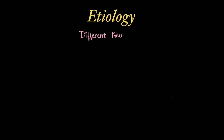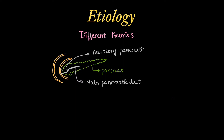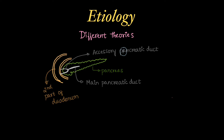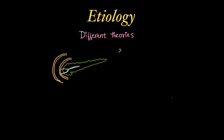Now that we have seen the case of groove pancreatitis, let's discuss the etiology. The relevant structures are the duodenum, pancreas, the main pancreatic duct, the accessory pancreatic duct, and the second part of the duodenum. The first cause can be obstruction of the minor papilla or the accessory pancreatic duct, leading to pent-up secretions.